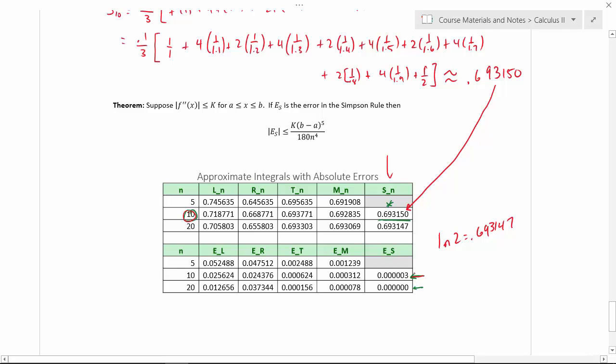So the error is significantly smaller for these. And as I mentioned in class, when we were talking about the midpoint rule and the trapezoid rule, we got order 1 over n squared in the error formula. Now, we got a very large number, 180 here. That actually is not nearly as significant as the power of n.